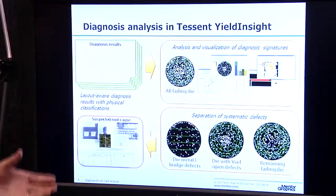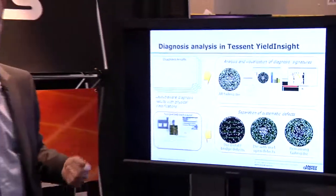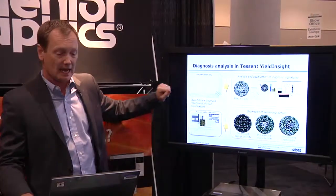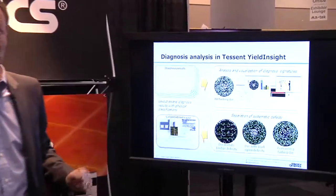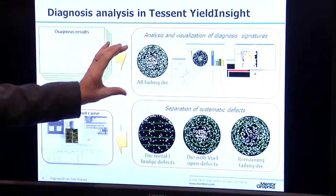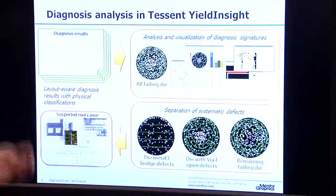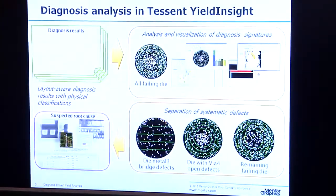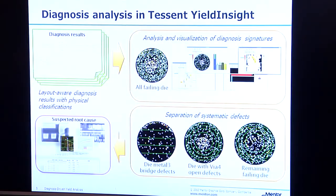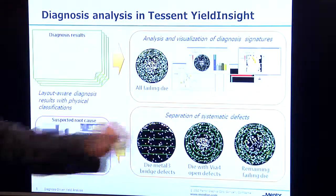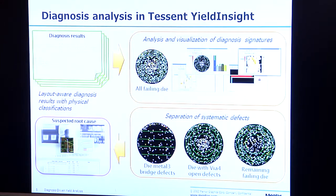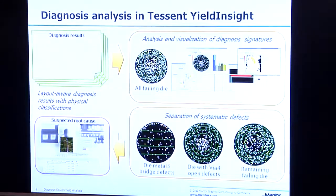In Yield Insight, which is a tool that analyzes diagnosis results, we can import these layout-aware diagnosis results and then analyze and visualize these results in different ways. An example of what we would like to do is to separate all the different devices based on their diagnosis results. As in this example, we see that there's one cluster of devices diagnosed to have bridges in Metal 3, and another cluster diagnosed to have opens involving VIA4s. The idea is to use the tool to separate these populations of devices.